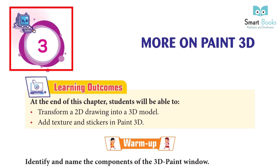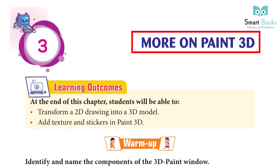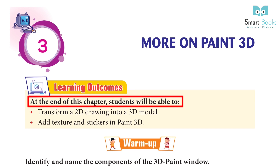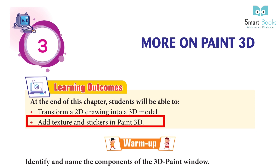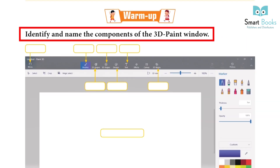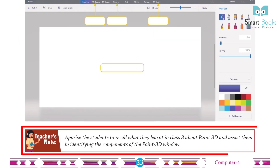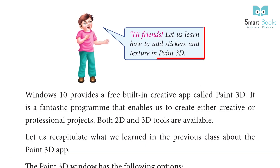Chapter 3: More on Paint 3D. Learning Outcome: At the end of this chapter, students will be able to transform a 2D drawing into a 3D model, and add texture and stickers in Paint 3D. Warm up: Identify and name the components of the Paint 3D window. Teacher's note: Apprise the students to recall what they learnt in class 3 about Paint 3D and assist them in identifying the components of the Paint 3D window.